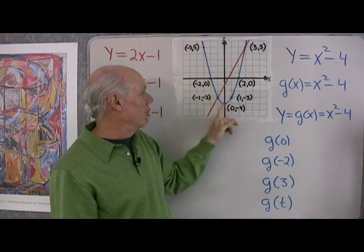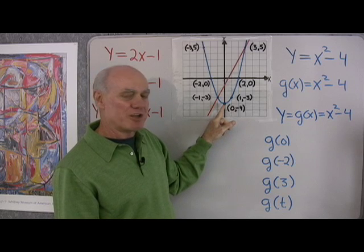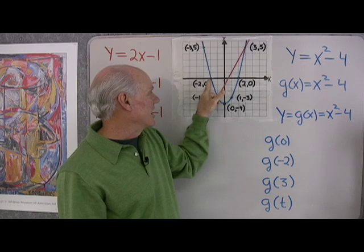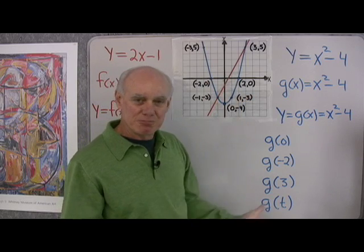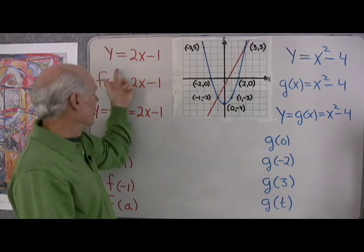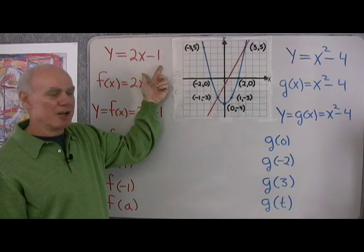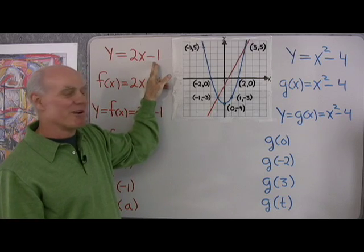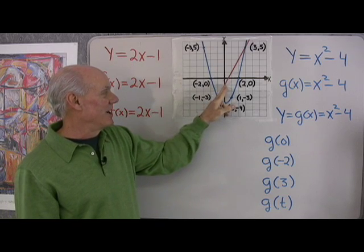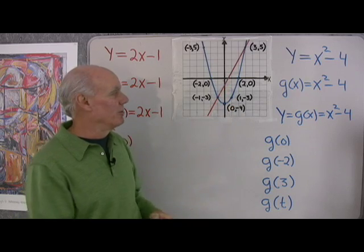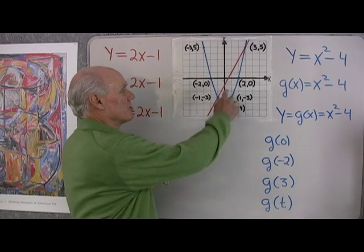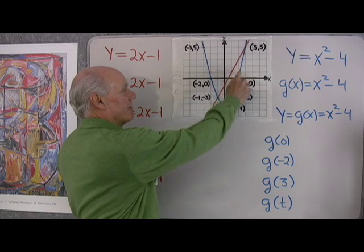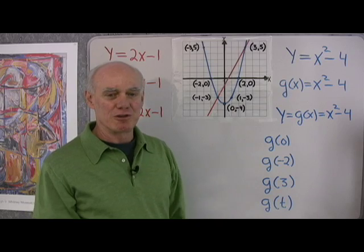I've drawn its graph over here. You can see it has a vertex at 0, negative 4, and crosses the x-axis at negative 2 and 2. This is a linear function, y equals 2x minus 1. It has a slope of 2 and a y-intercept of negative 1. It crosses the y-axis at negative 1, and every time I go over 1 and up 2 I'll get back to the graph. That's what it means to have a slope of 2.